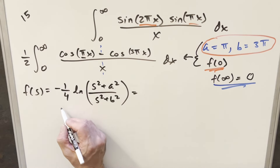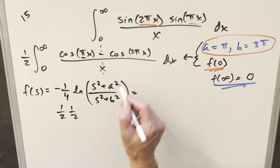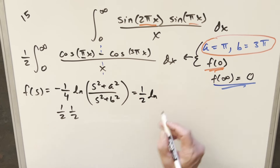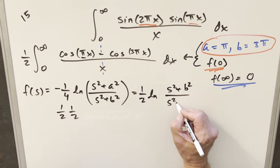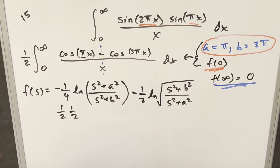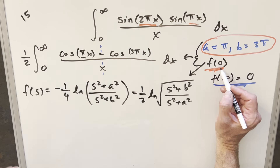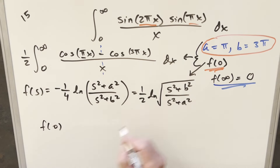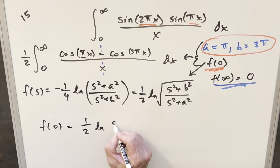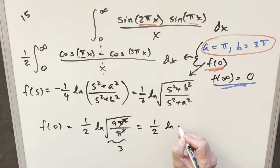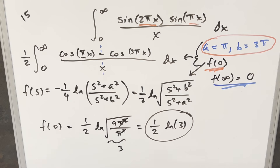Let's clean this up: writing -1/4 as -1/2 · 1/2 and using the minus sign to flip the fraction, we get f(s) = (1/2) · ln√((s² + b²)/(s² + a²)). Now plugging in s = 0, a = π, b = 3π: f(0) = (1/2) · ln√(9π²/π²) = (1/2) · ln√9 = (1/2) · ln(3). So the final answer is (1/2)ln(3). Good one from the Florida Integration Bee 2016 — thanks everyone for watching!